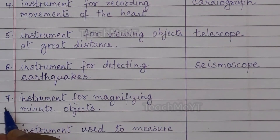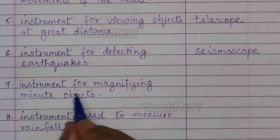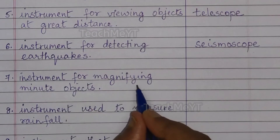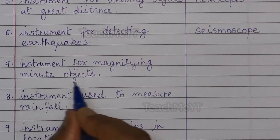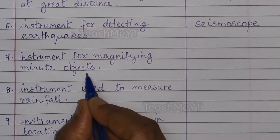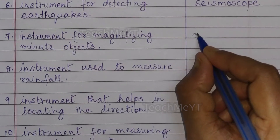Number 7. Instrument for magnifying minute objects is a microscope.